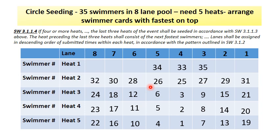Only the last three heats are circle seated, as you can see in this seating example. In 400, 800, and 1500 meter events, only the last two heats are circle seated. Generally you only see it in the 400, as the 800 and 1500 are only swum as prelims and finals at world championships or Olympic Games.